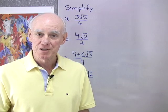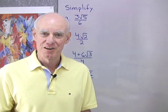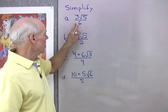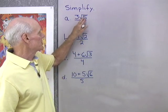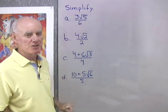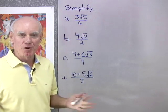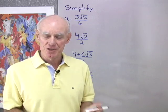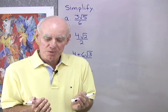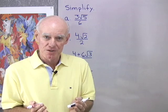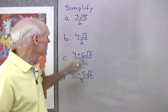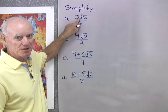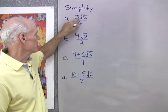I want to simplify some expressions that involve radicals, and the first one I have up here is 3 square root 5 over 6. I want to remind you that 3 square root 5 isn't just one expression by itself — it's 3 times the square root of 5. So this is multiplication between these two expressions.